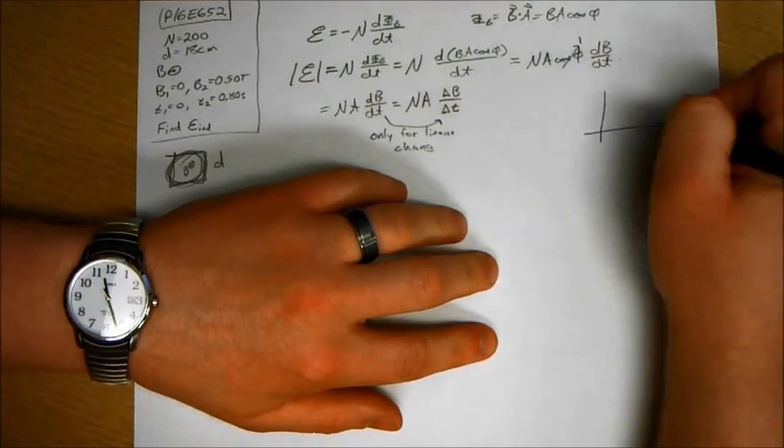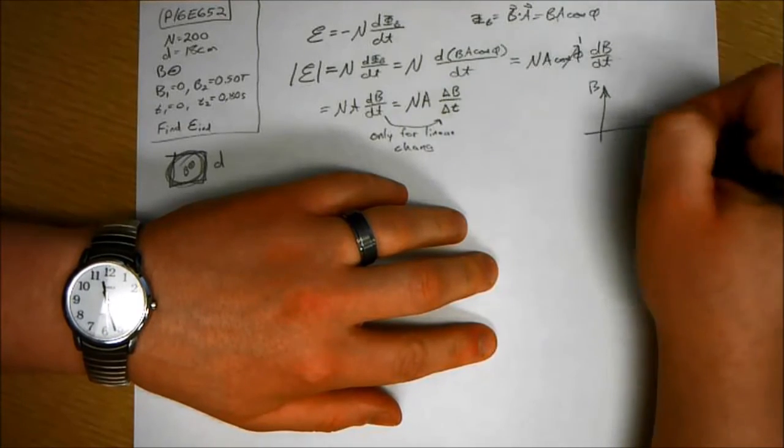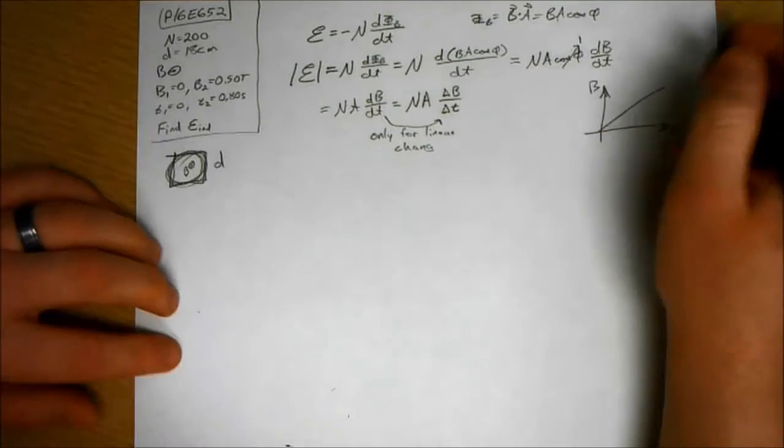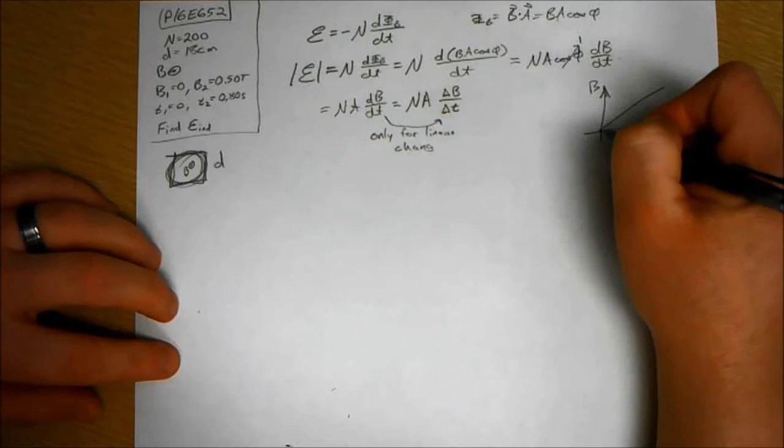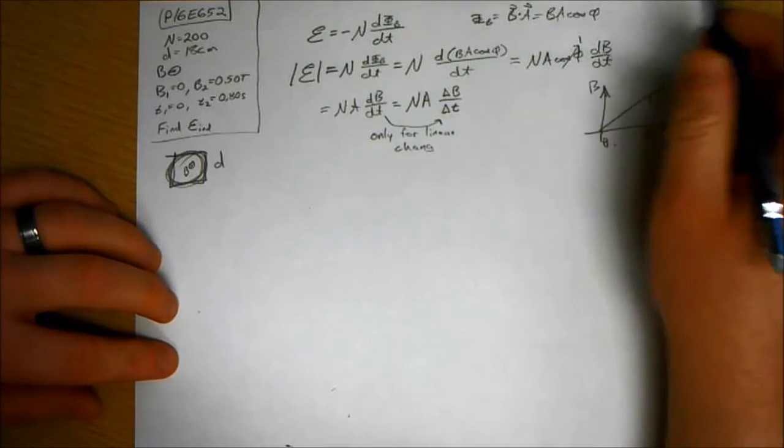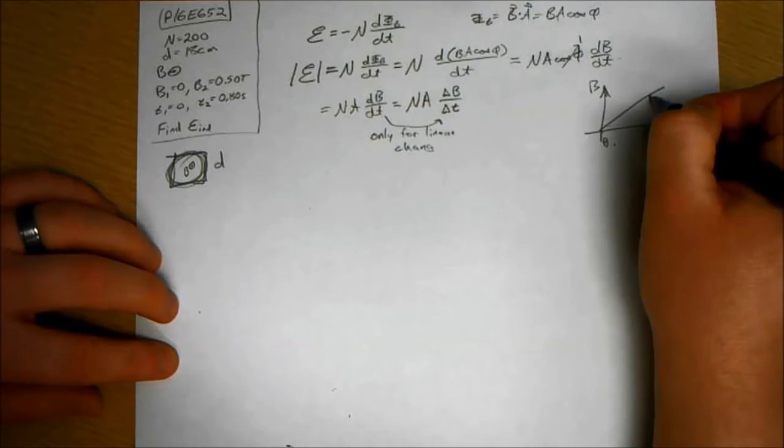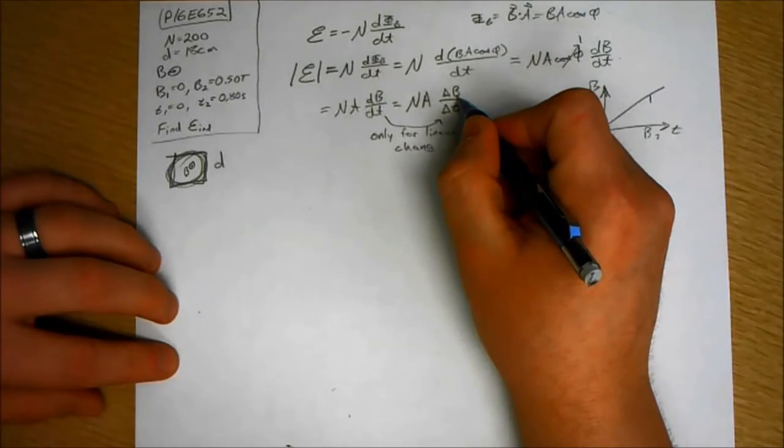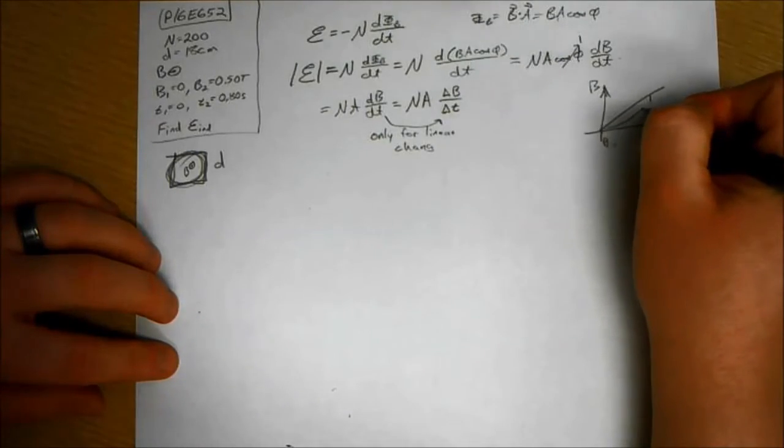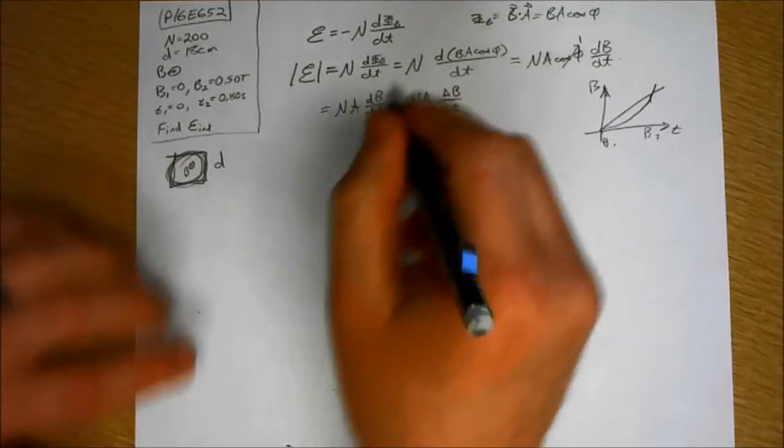But in this case, it's just, we look at delta B over delta T. The problem states that it's increasing linearly from B1 to B2. So that way the derivative of this is just the slope of the straight line, which is delta B delta T. If it were to change like this, well then we would have to differentiate the function. So this makes things a lot easier.